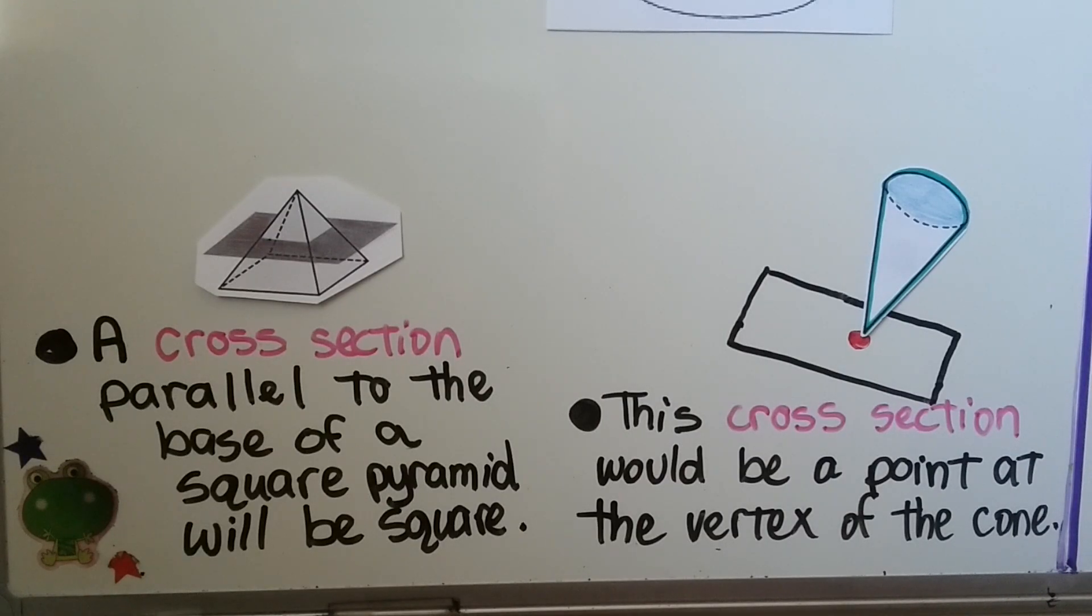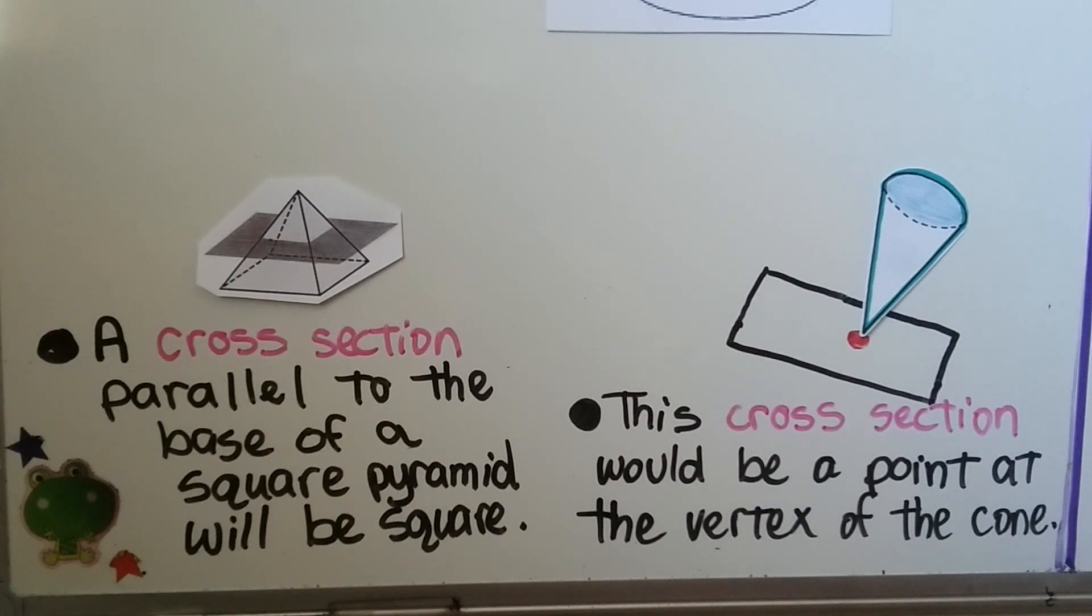A cross section parallel to the base of a square pyramid will be a square. We'll have a square here. And if we did the cross section parallel to the base of a triangular pyramid, we'd have a triangle. And this cross section would be a point at the vertex of the cone.